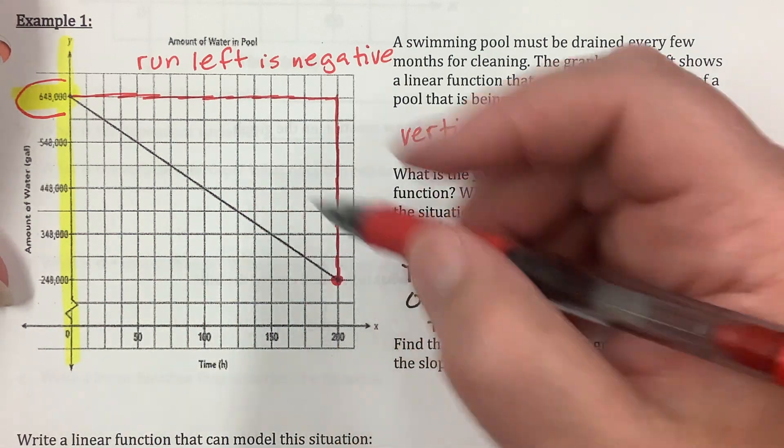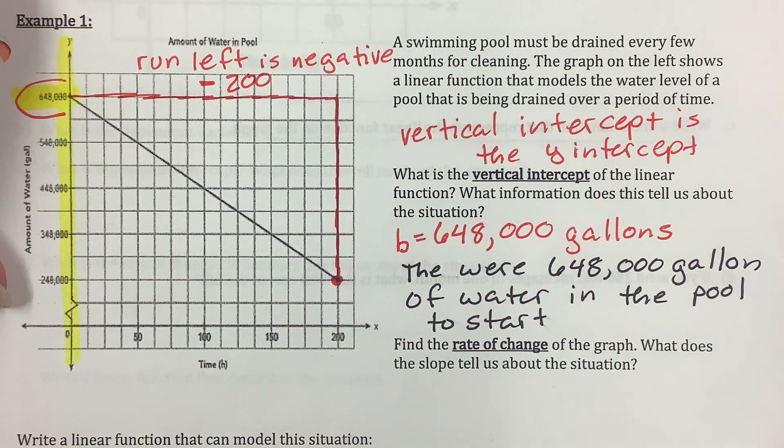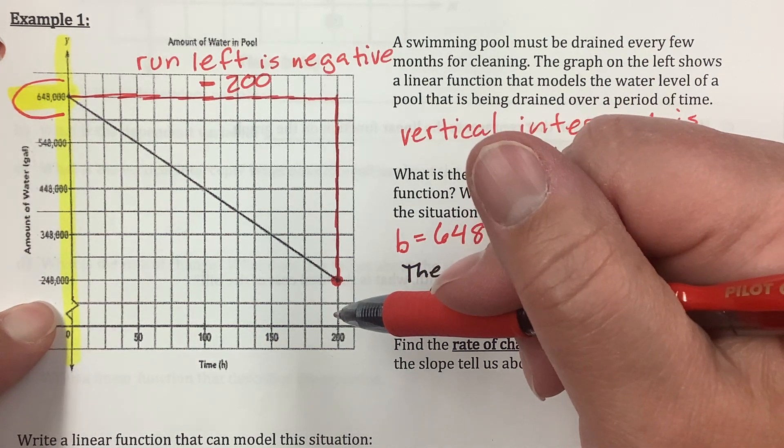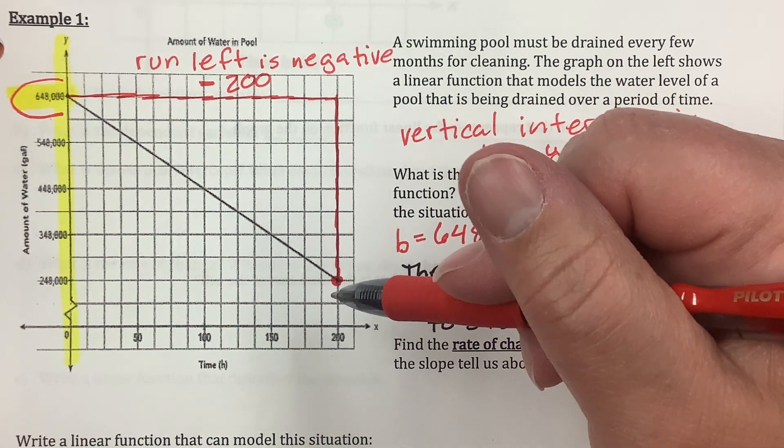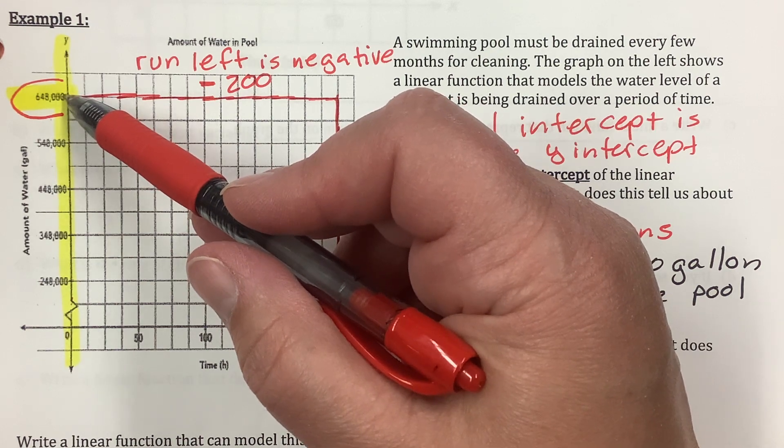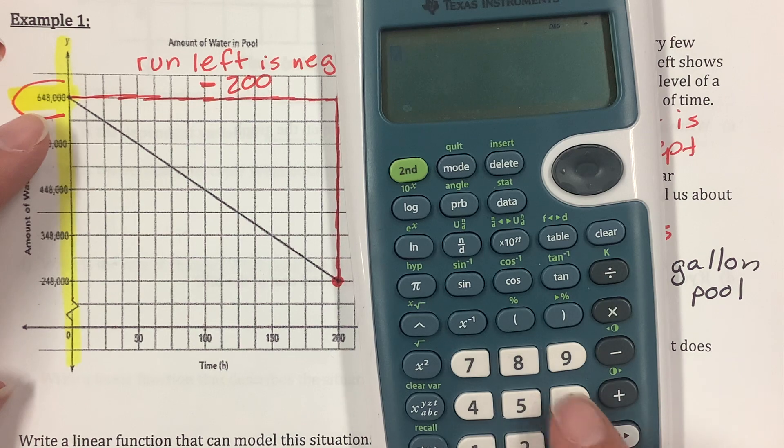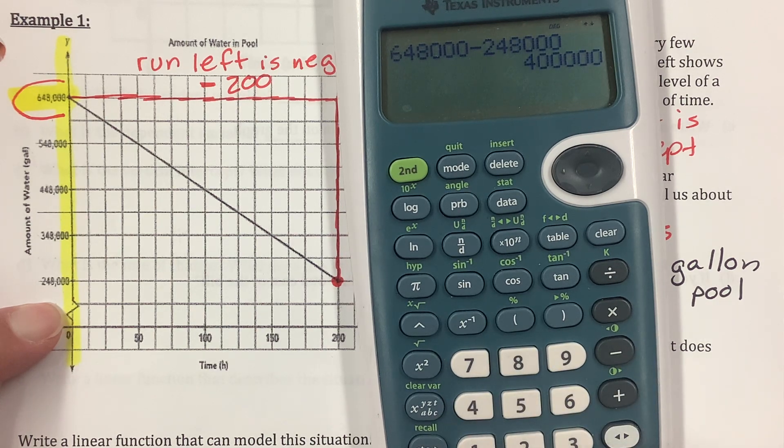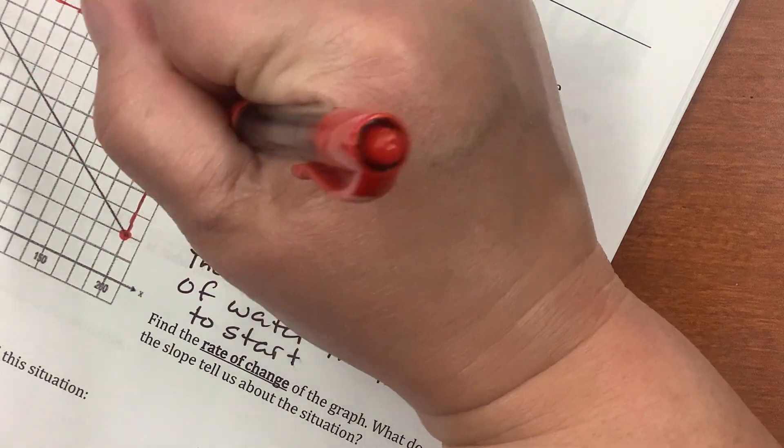And I'm going to do the run first, because it's easy. So, from 0 to 200, it's negative 200. Now, how much water is in the pool? I started with 648,000, and now I have 248,000. That is 400,000 gallons. I'm going to double check it. I'm going to subtract my Y2 minus my Y1. 648,000 minus 248,000. And that's 400,000 gallons of water. Okay, so this is 400,000. That's the rise.